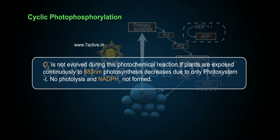O2 is not evolved during this photochemical reaction. If plants are exposed continuously to 683 nanometers, photosynthesis decreases due to only photosystem 1. No photolysis and NADPH2 not formed.